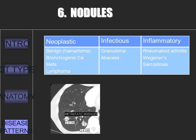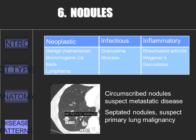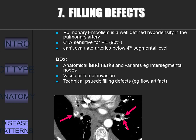The differential diagnosis of a chest nodule is listed above. More than 95% are either primary neoplasms, hamartoma, or infectious granulomas. Circumscribed nodules suggest metastatic disease, whereas more septated nodules would suggest a primary lung cancer.